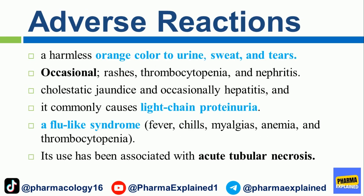Adverse reactions include a harmless orange color to urine, sweat, and tears. Occasional rashes, thrombocytopenia, and nephritis may occur. Cholestatic jaundice and occasionally hepatitis, and it commonly causes light-chain proteinuria. A flu-like syndrome of fever, chills, myalgias, anemia, and thrombocytopenia has been reported. Its use has been associated with acute tubular necrosis.